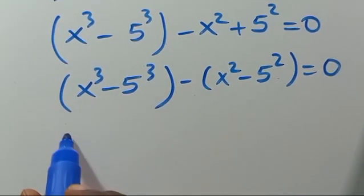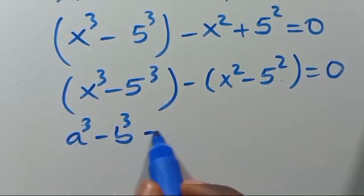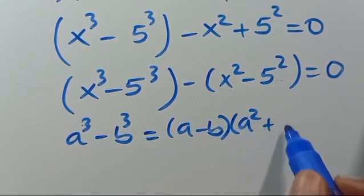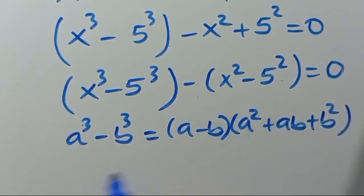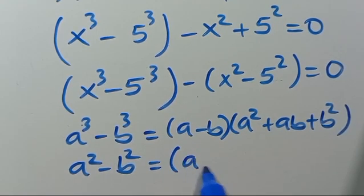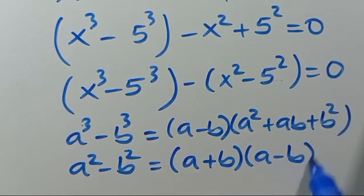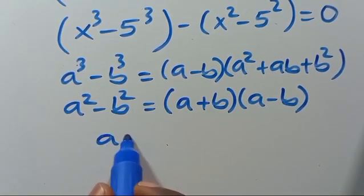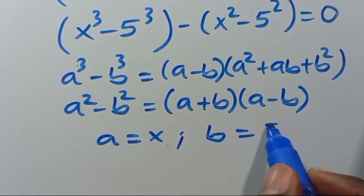We recall that when we have A to the power of 3 minus B to the power of 3, it always equals A minus B in parentheses multiplied by A squared plus AB plus B squared. We also recall that A squared minus B squared equals A plus B multiplied by A minus B. Making the comparison, our A equals X and our B equals 5.